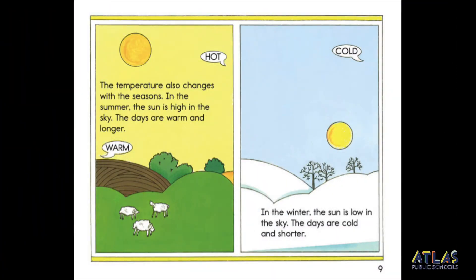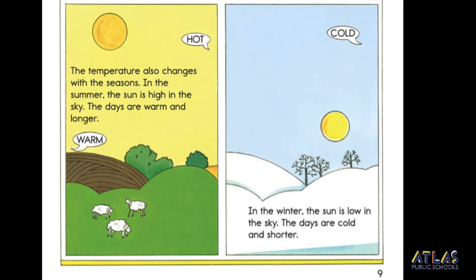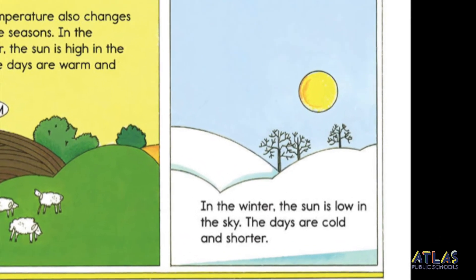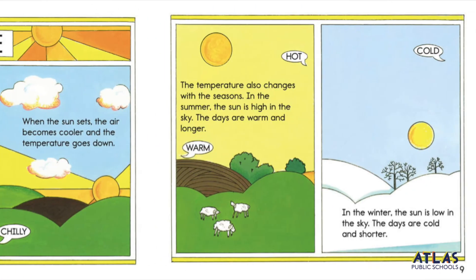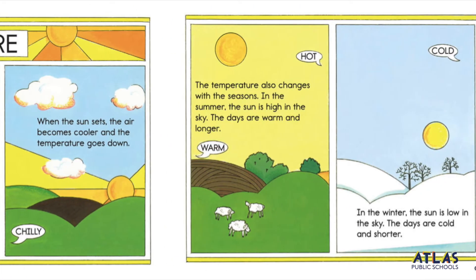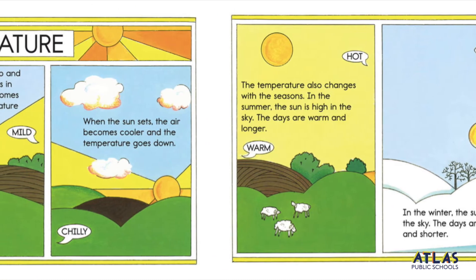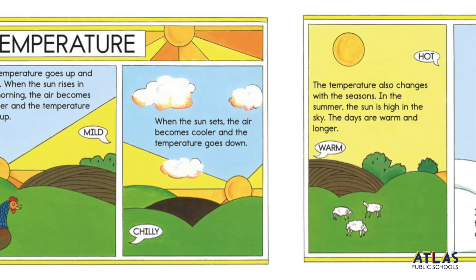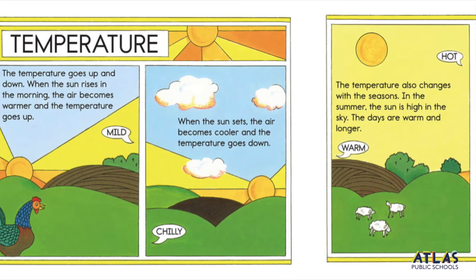The temperature also changes with the seasons. In the summer, the sun is high in the sky. The days are warm and longer. In the winter, the sun is low in the sky. The days are cold and shorter. Do you prefer the days in the summer that are longer and warmer, or do you prefer the days in the winter that are darker and shorter?